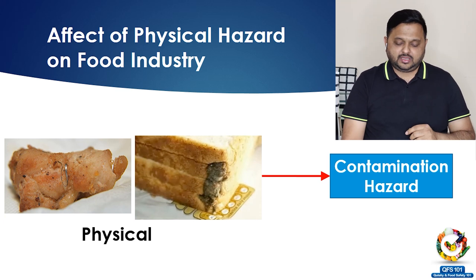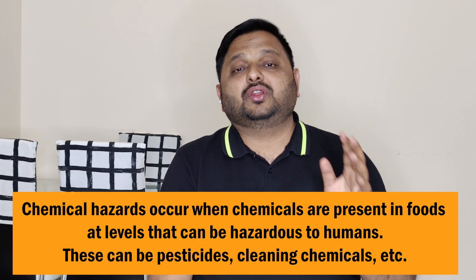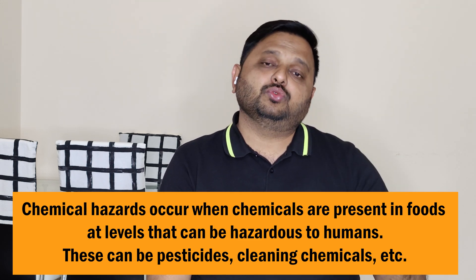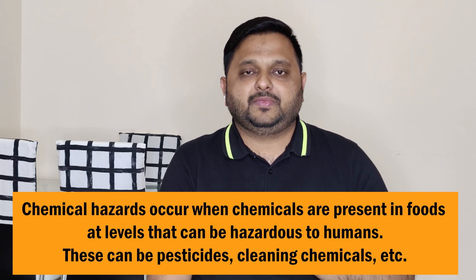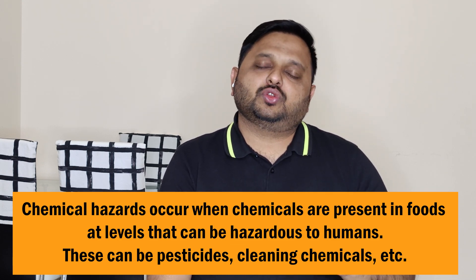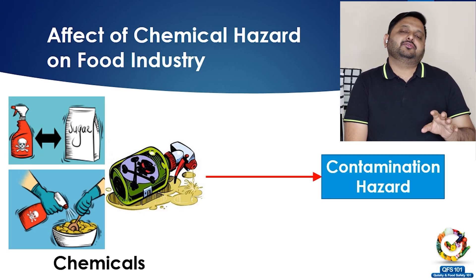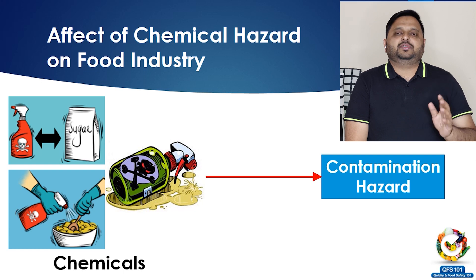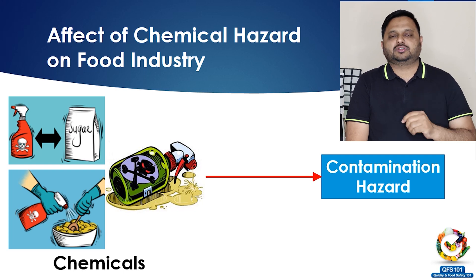Chemicals such as pesticides, fungicides, or cleaning chemicals, if they enter food, can cause very severe damage to the body of a consumer in both short-term and long-term exposure. Chemicals cause contamination in food. There have been many cases of chemical poisoning, and when we discuss contamination in detail in a later video, we will cover some of those cases.